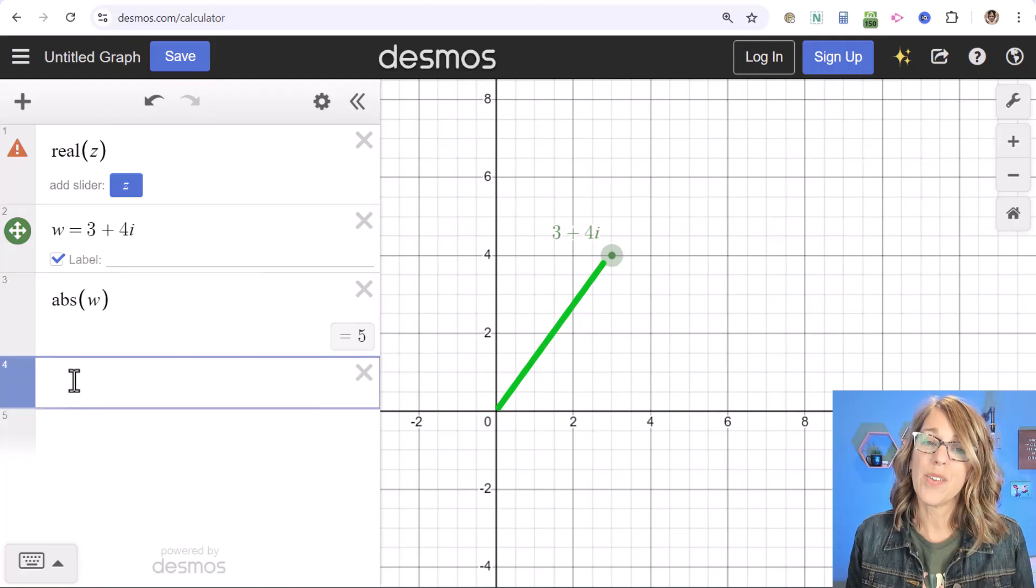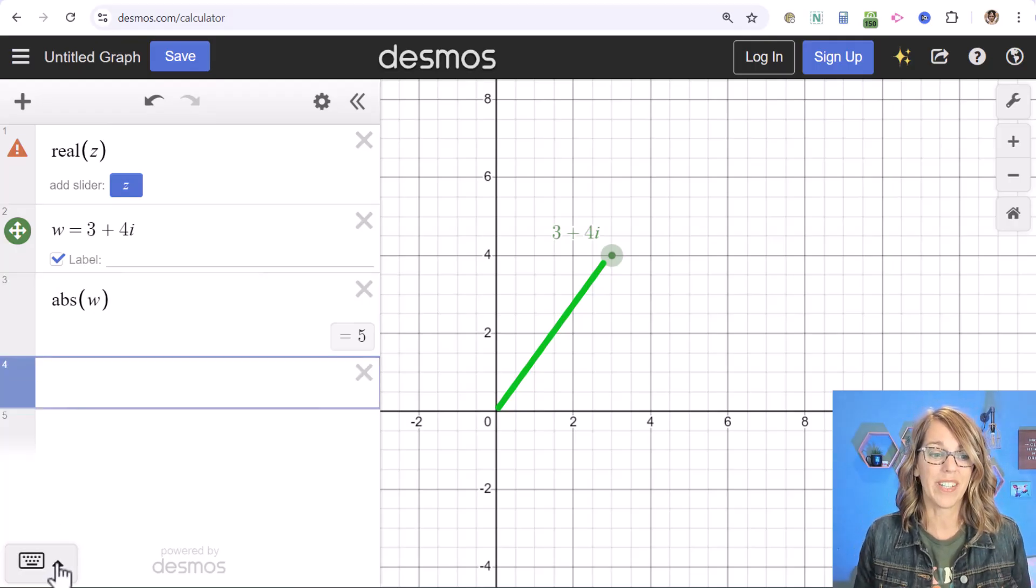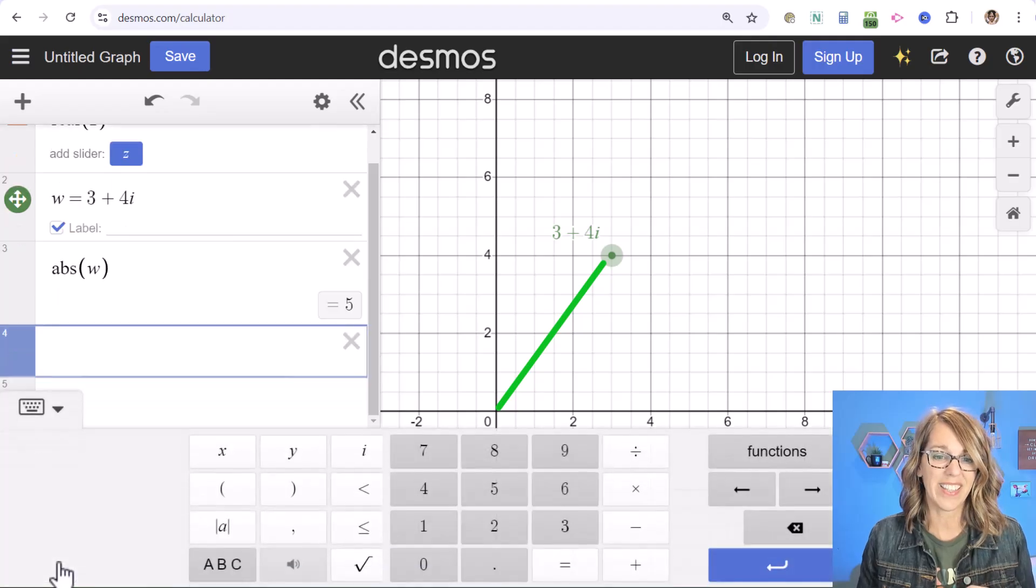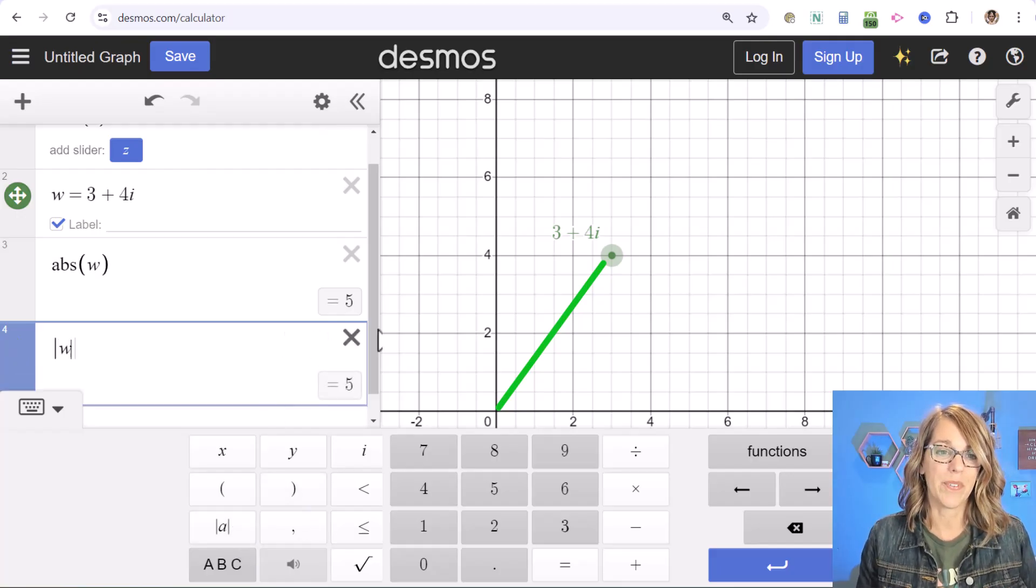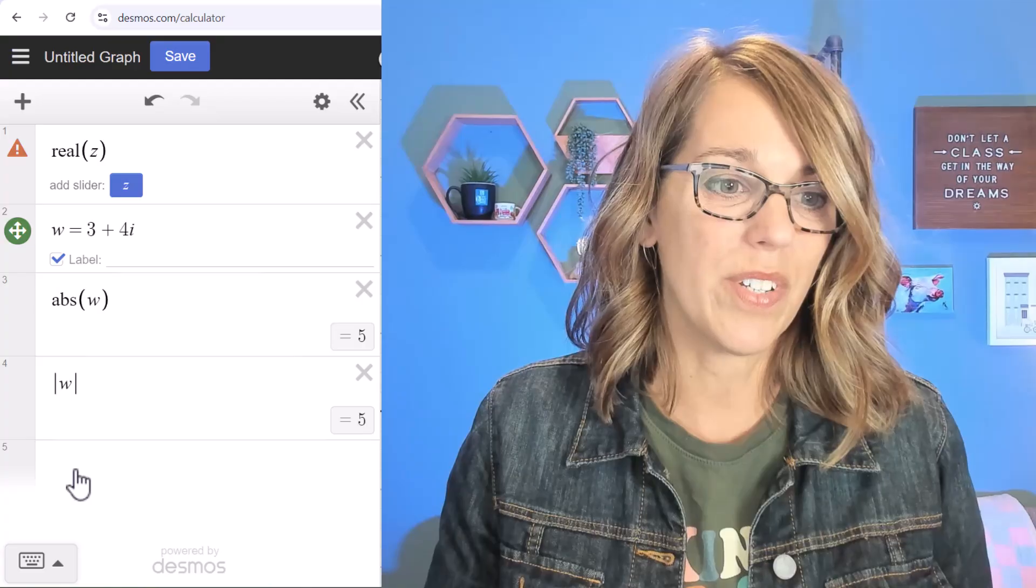Let's grab another cell. You can also do this with the absolute value symbol. Let's open up that keyboard by clicking that up arrow and choosing the absolute value symbol above abc and typing in w.